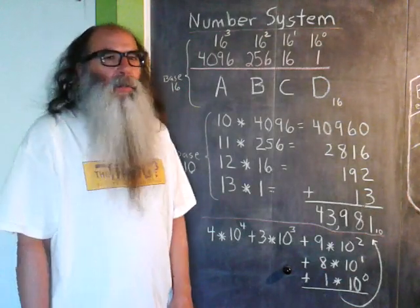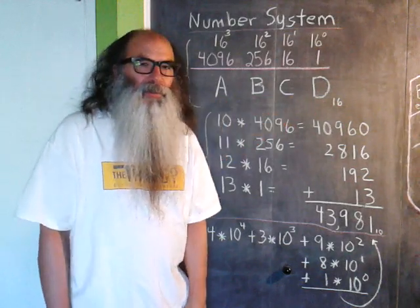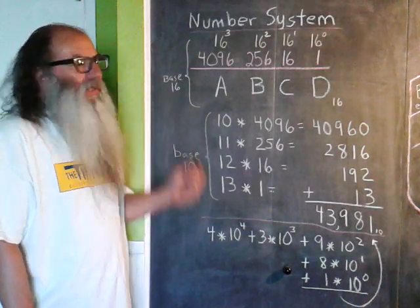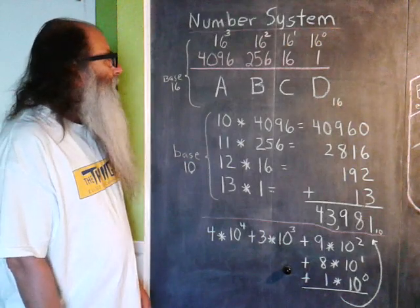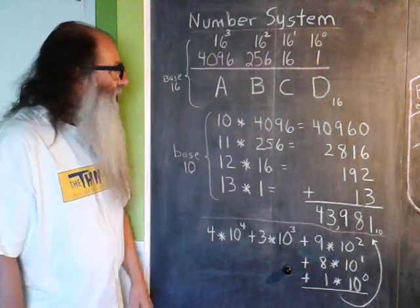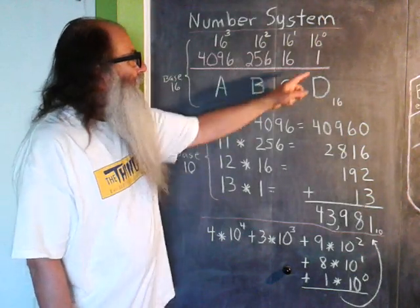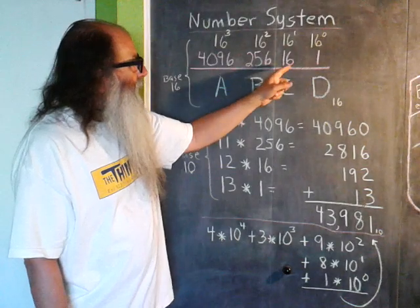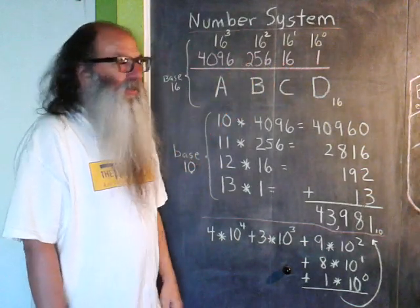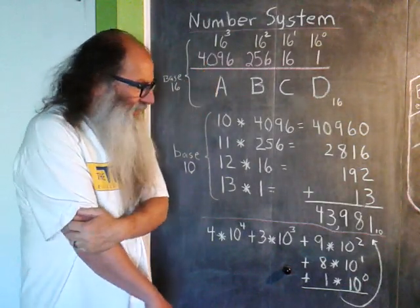In the base 10 number system, each of our digits have place values, and those place values are dictated by powers of 10. When we move to the base 16 number system, or the hexadecimal number system, well now the place values are powers of 16. In other words, in base 16 and hexadecimal, we have a ones, but the tens are the sixteens, and the hundreds are the 256s, and the thousands are the 4096s.